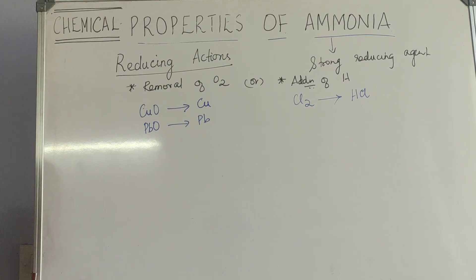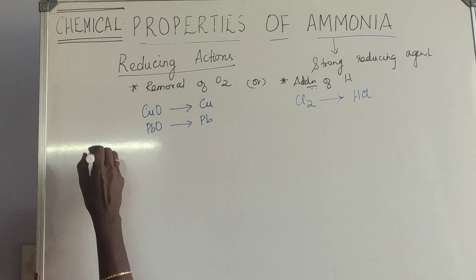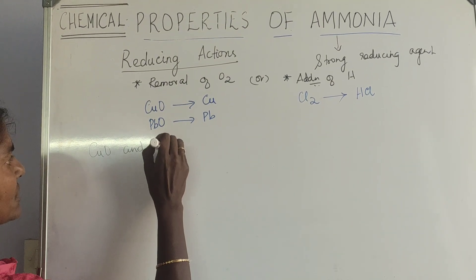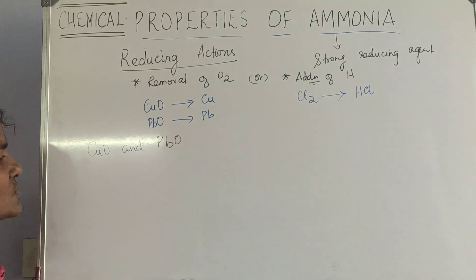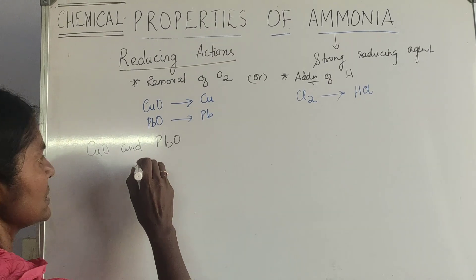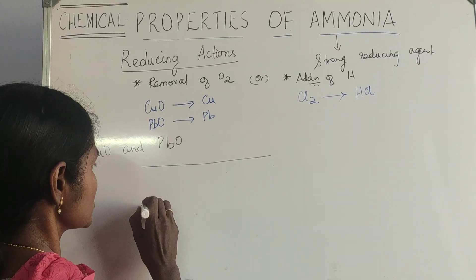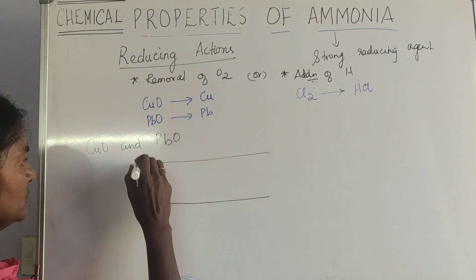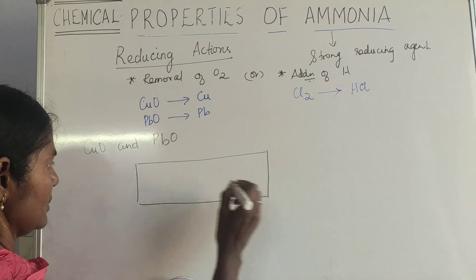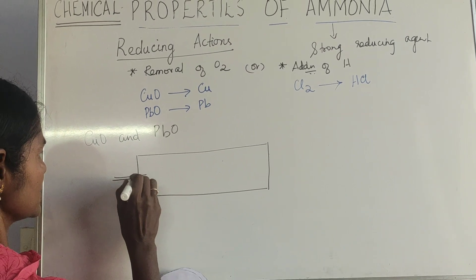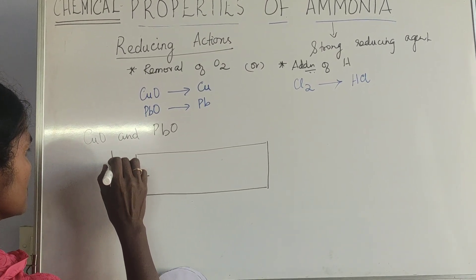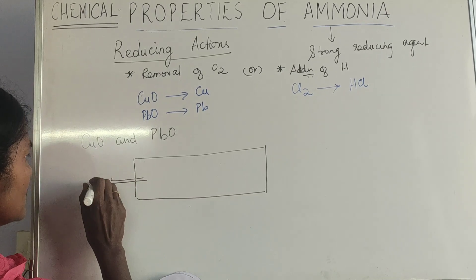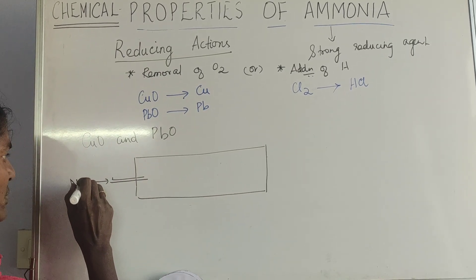Now first let us see the first one — copper oxide and lead oxide. For this we use a diagram where there is a combustion tube that is very hard, and there is a tube through which ammonia gas is being passed.